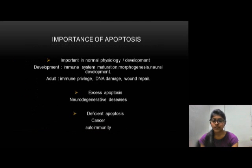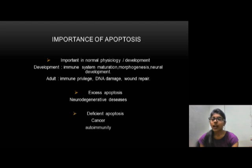Apoptosis plays a major role in normal physiology and development. During development, this includes immune system maturation, morphogenesis, and neural development. In adults, it plays a role in immune privilege, DNA damage response, and bone repair. Excess apoptosis may cause neurodegenerative diseases, while deficiency of apoptosis may cause cancer and autoimmunity in the body.